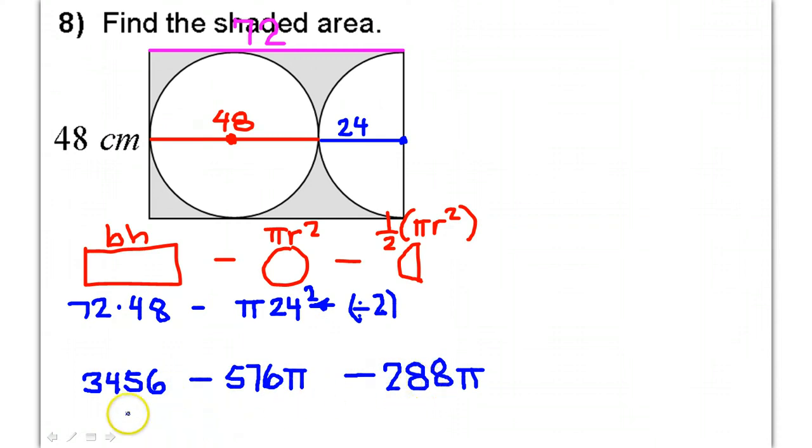So, that's going to give us 3,456 minus, let's see, 576 plus 288 is 864. All right, so, 864 pi.